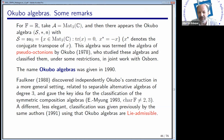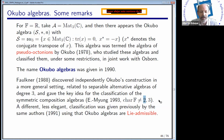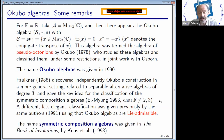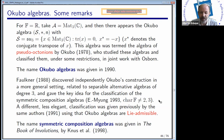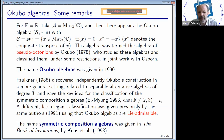Characteristic 3 is a bit different and will be discussed tomorrow. Finally, the name 'symmetric composition algebras' was coined in the Book of Involutions — an incredible book by Knus, Merkurjev, Rost, and Tignol — which deals with algebraic groups, quadratic forms, non-associative algebras, and many other topics. I will stop here; thank you very much.